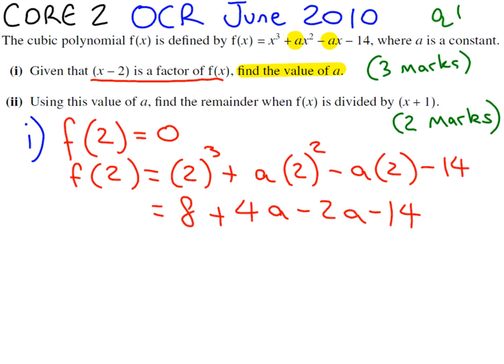And we know that this equals 0, from the factor theorem. So when we simplify, we get that 2a minus 6 equals 0.